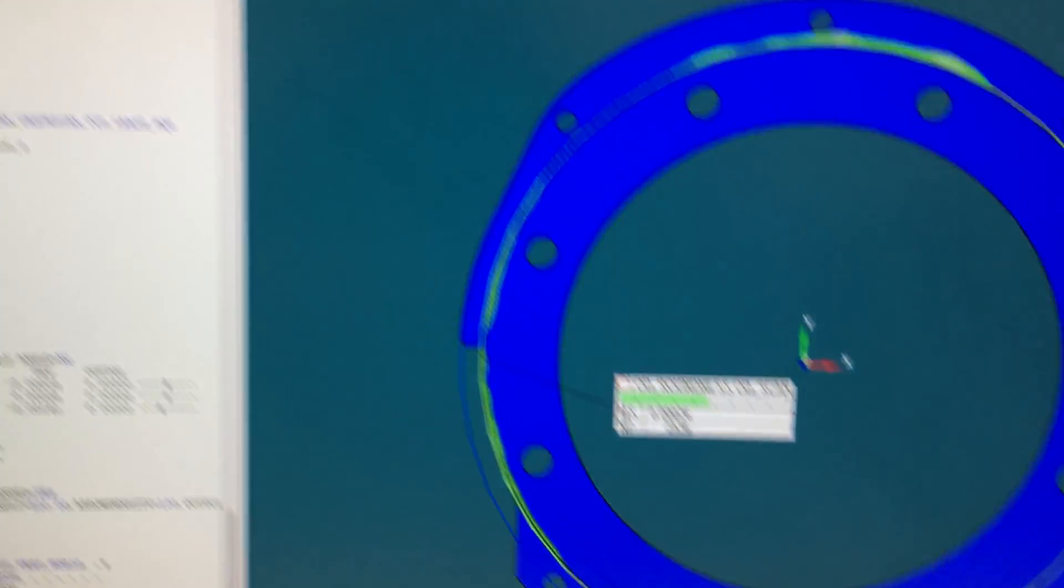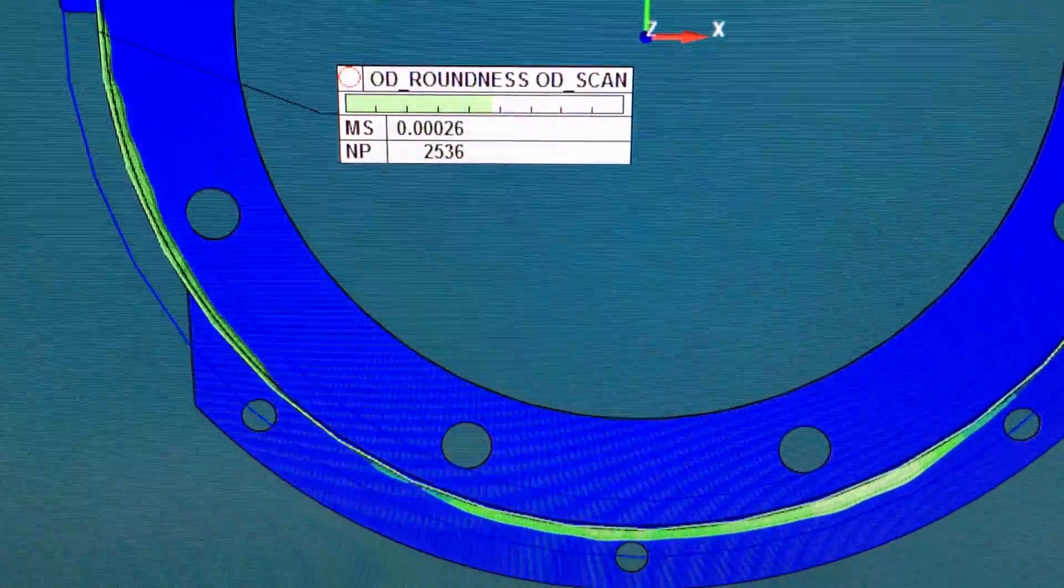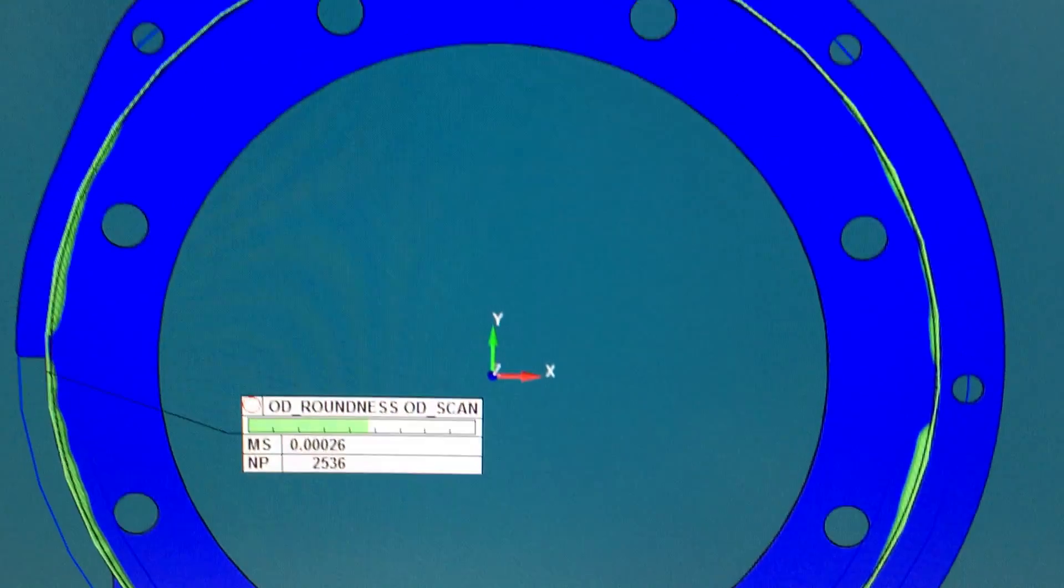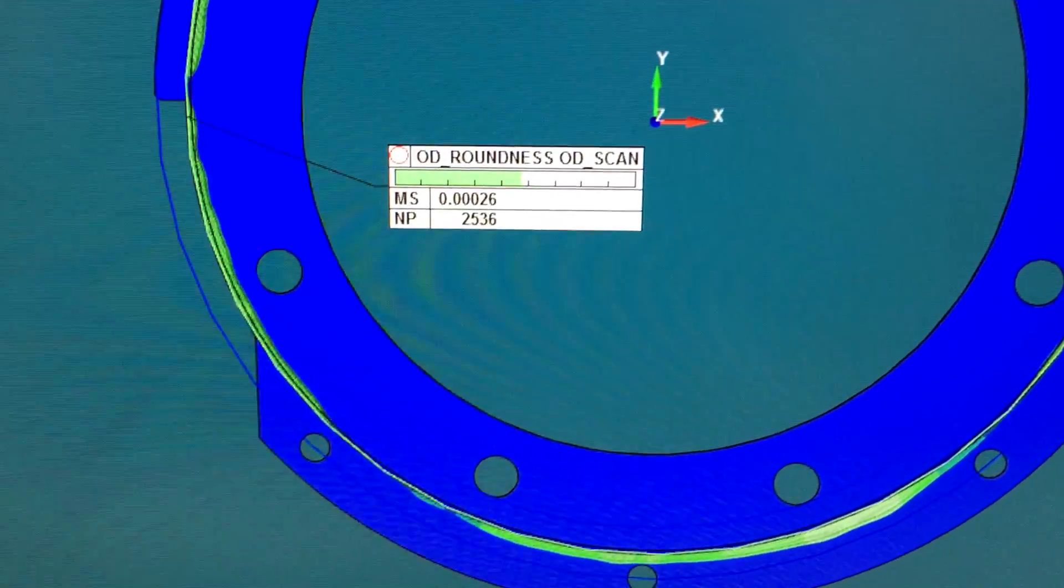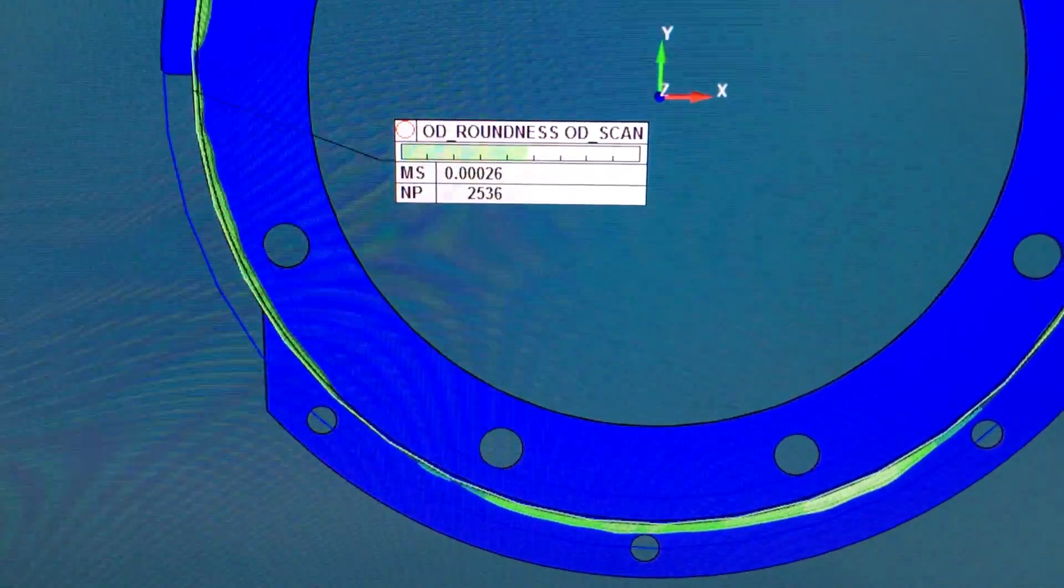So there's the graph in PCDMIS that we'd see on the report. A little over two-tenths on our roundness tolerance. We did that finished cut at about 130 inches a minute, so that's pretty good.